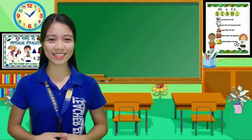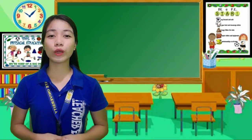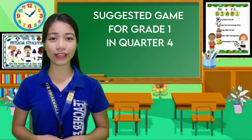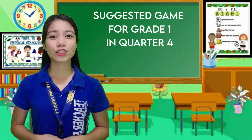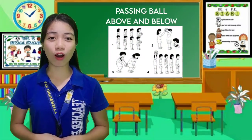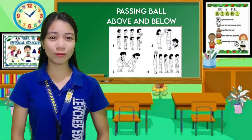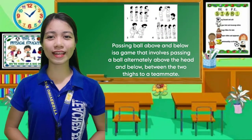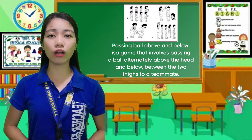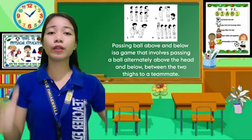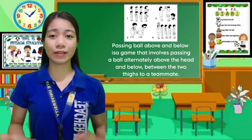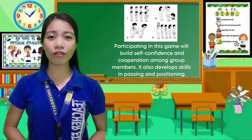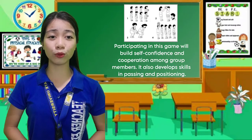Good morning class. Today we will be discussing the suggested games for Grade 1 in Quarter 4. We have here: Passing Ball Above and Below. Passing Ball Above and Below is a game that involves passing a ball alternately above the head and below between the two legs to a teammate. Participating in this game will build self-confidence and cooperation among group members.